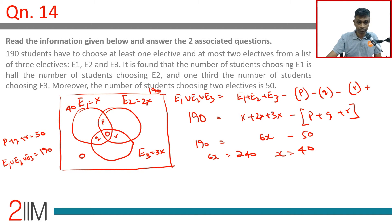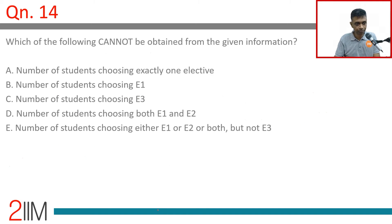So 40 take e1, 80 take e2, 120 take e3. P plus q plus r is 50, everything intersection is 0, outside is 0. Lovely. Which of the following cannot be obtained from the given information? Number of students selecting exactly one elective.